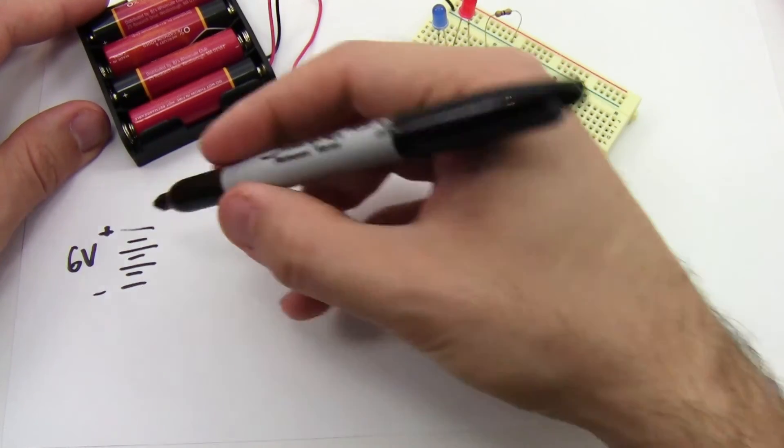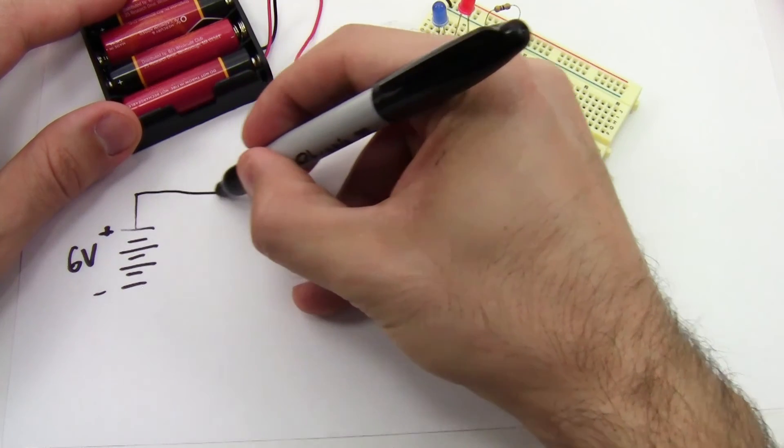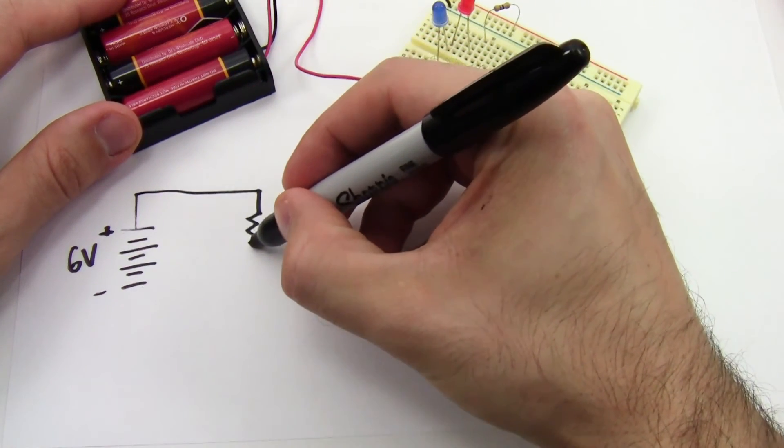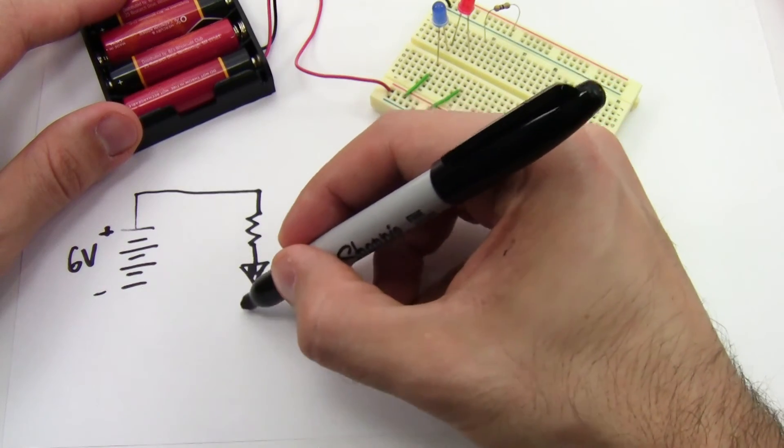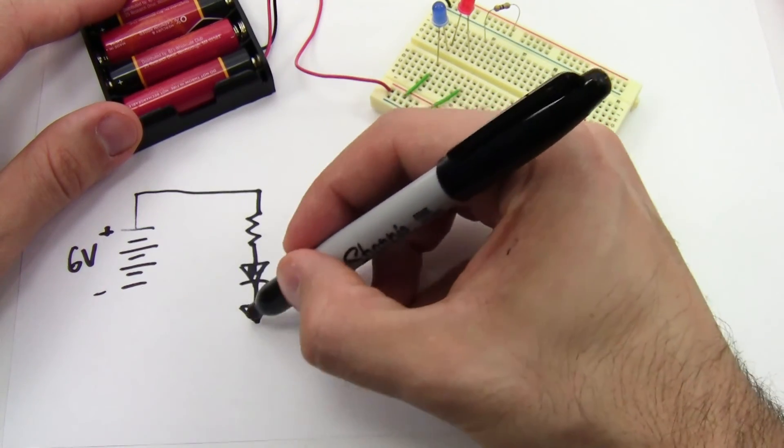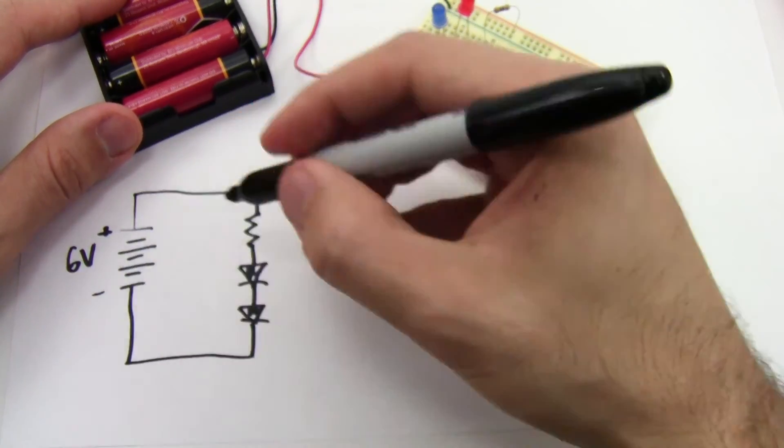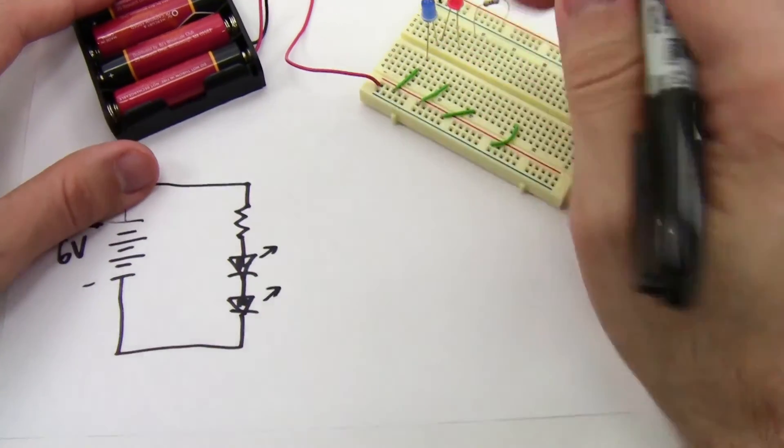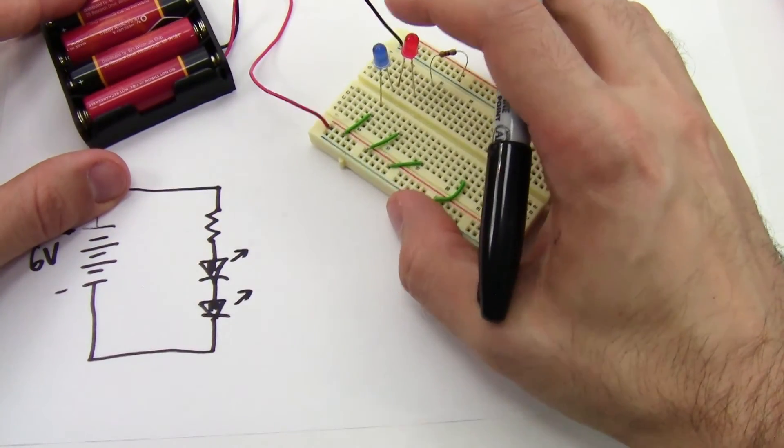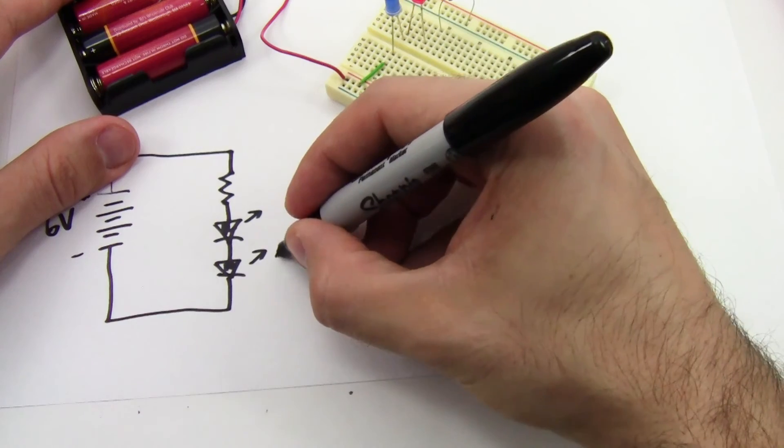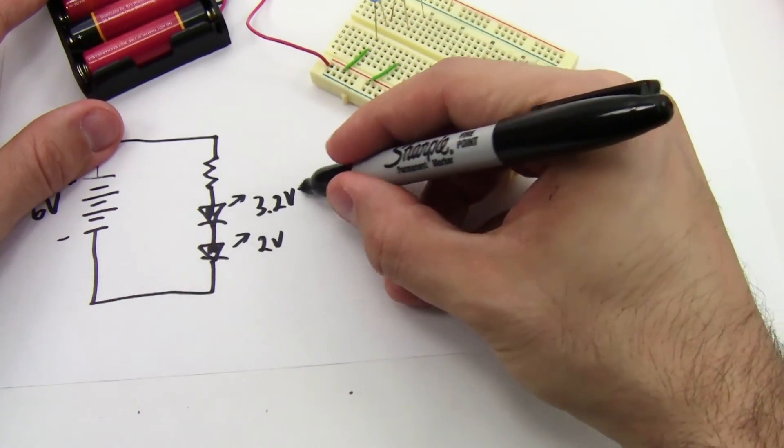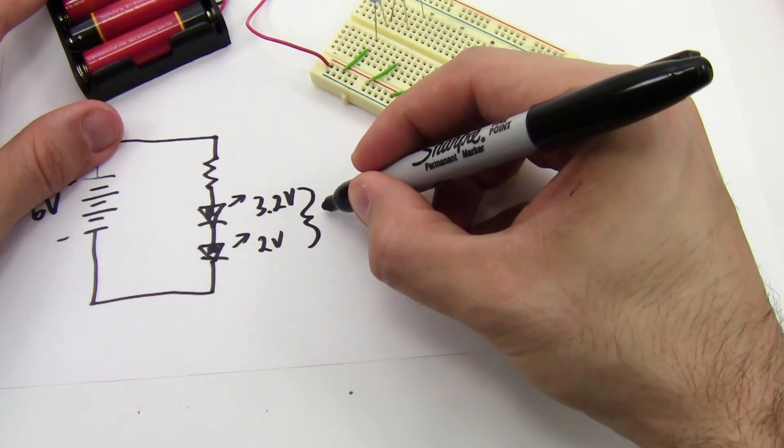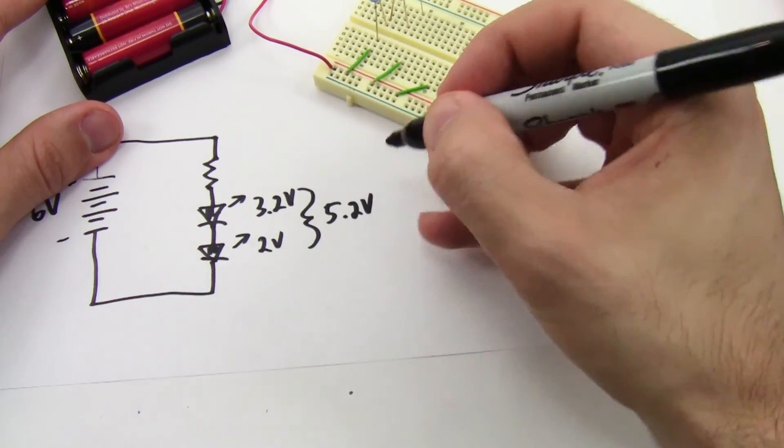So now you have a battery pack providing 6 volts. You still only need a single resistor, and you can put the two LEDs in series with each other so their voltage drops add up. In this case, I've combined a red LED and a blue LED, so I'm going to have a voltage drop of 2 volts, and 3.2 volts, which since they're in series, are going to add to a total voltage drop of 5.2 volts across both the LEDs.